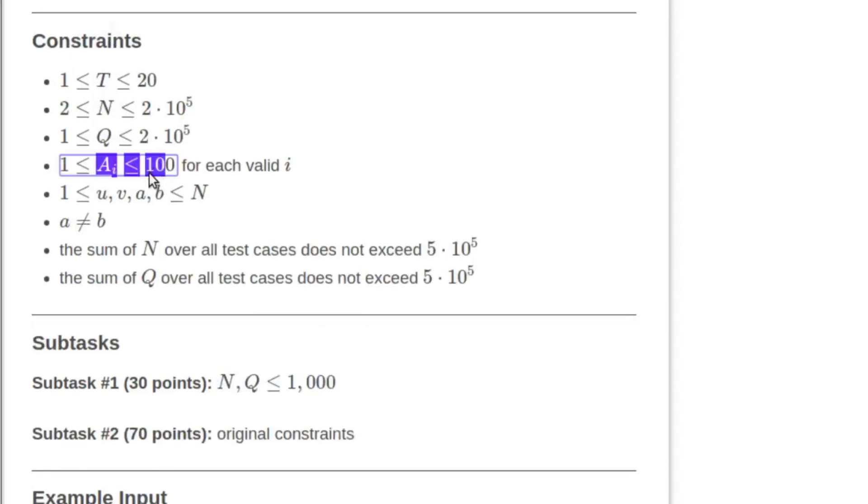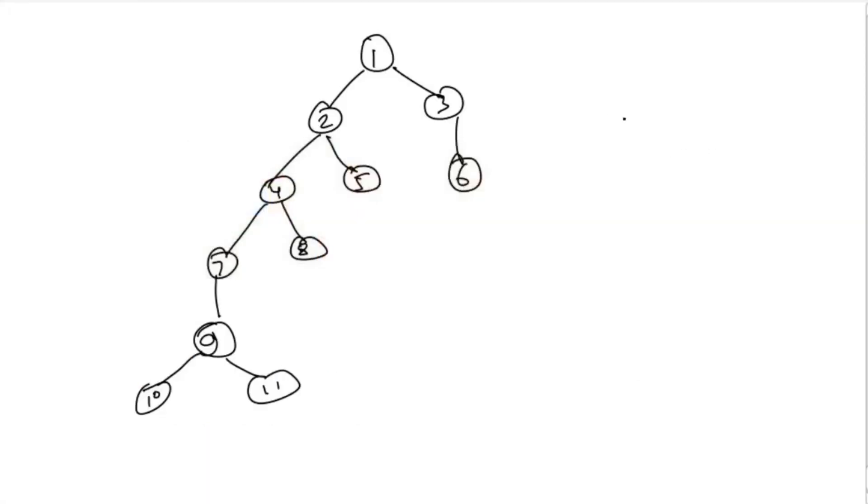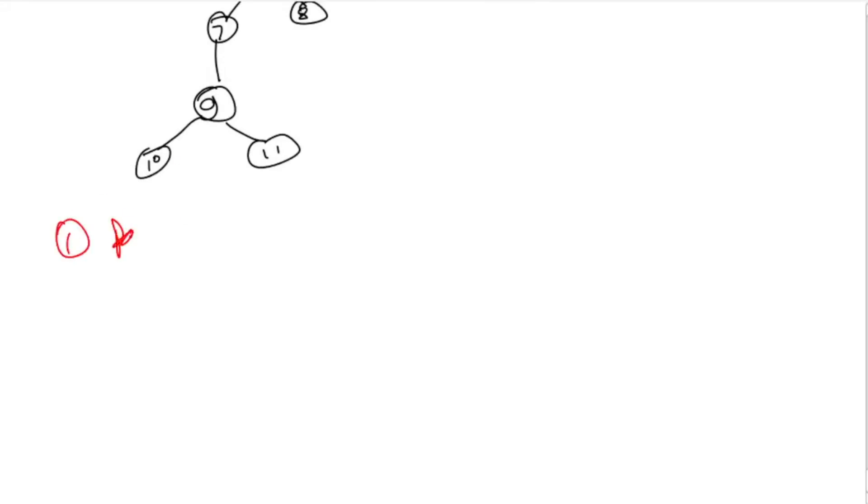Let's divide this problem into two cases. First case: the path length between a and b is greater than 100. Since there are only 100 distinct values of ai, and we have more than 100 nodes in the path, you can say that the value of at least two nodes will be the same.